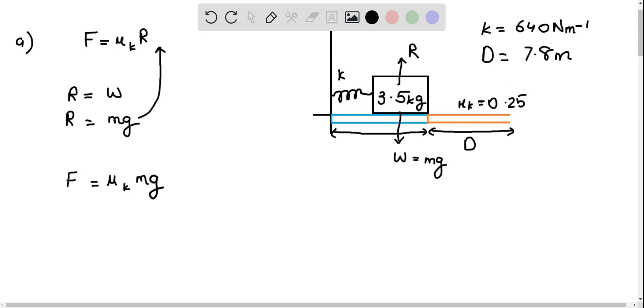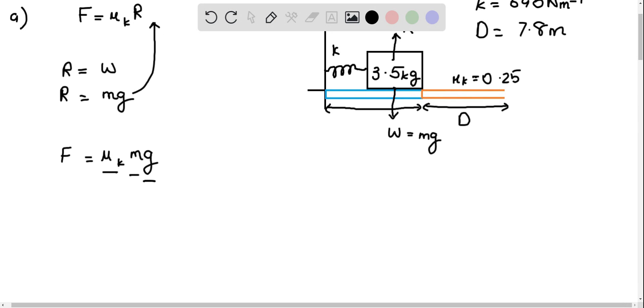Now, note that all of these are constants. The coefficient of kinetic friction is a constant, the mass of the block is a constant, and the gravitational acceleration is also constant. Now, when we have a constant force, its work done is the force times the distance traveled under the influence of the force.